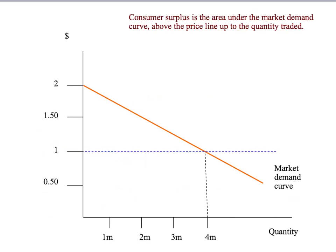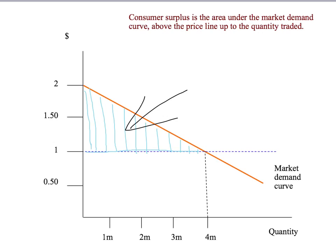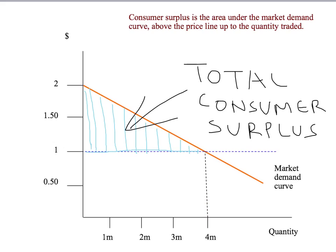Rather than looking at each individual buyer, we just look at the market demand curve. Let's imagine we're looking at the Australian apple market, with quantity of apples on the horizontal axis and price on the vertical axis. Imagine the equilibrium price was $1 per kilogram of apples, and at that price 4 million apples are traded in Australia. Then to get the consumer surplus of the entire Australian apple market, we can simply look at this blue shaded area — the area under the market demand curve, above the price that consumers pay, up to the quantity that consumers actually purchase.